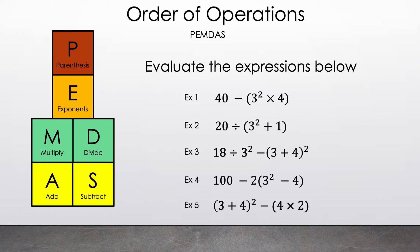Now let's take a look at the examples we'll be discussing in today's video. Let's look at the image on the left-hand side and discuss why multiply and divide are on the same row as well as add and subtract. Since multiply and divide are inverses, as well as add and subtract, they are on the same row, which means they have the same magnitude. So we read them left to right when we only have multiply and divide left, or when we only have add and subtract.